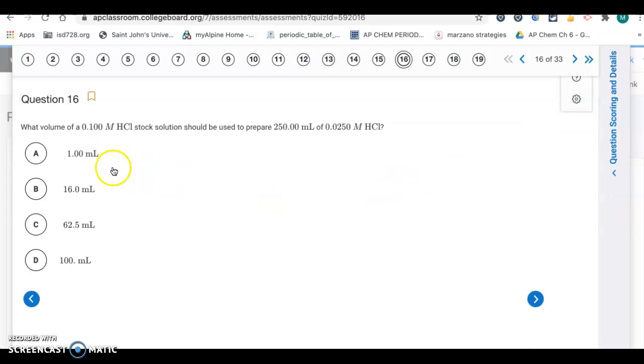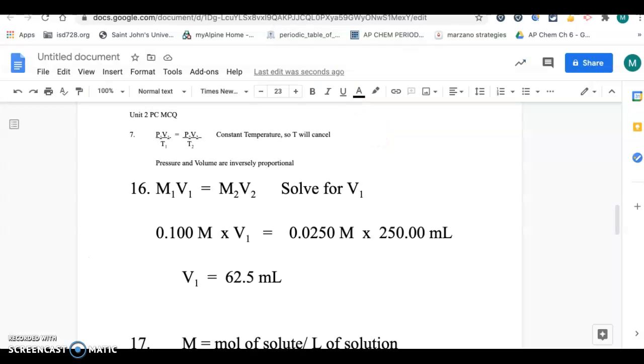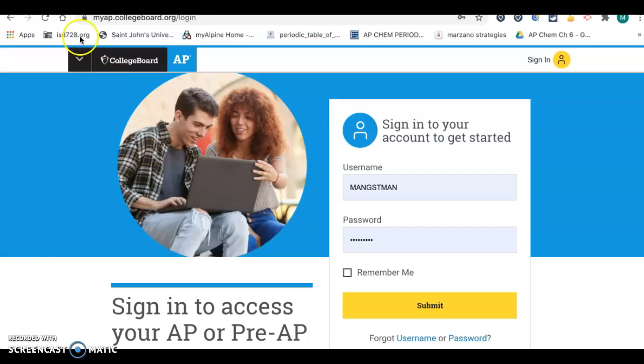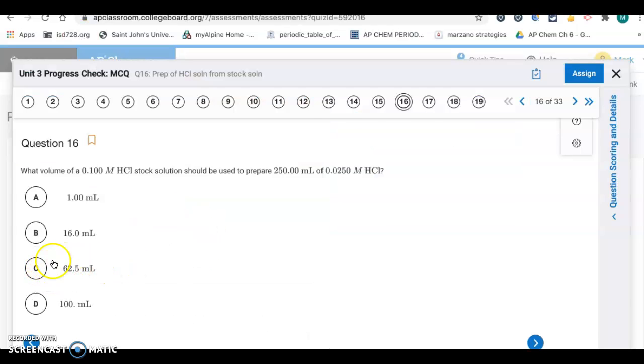Number 16. What volume of a 0.1 molar HCl stock solution should be used to prepare 250 milliliters of a 0.025 molar HCl? This is a dilution problem. Here's the work right here. This is the equation we use for dilutions, where the 1s are your concentrated side, the 2s are your dilute side. We're solving for V1, so we plug in the information, divide to solve for V1, and we get 62.5 milliliters. That's letter C for number 16.